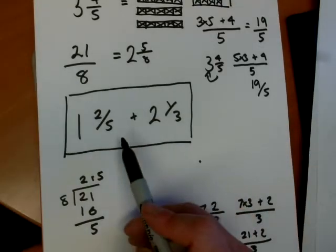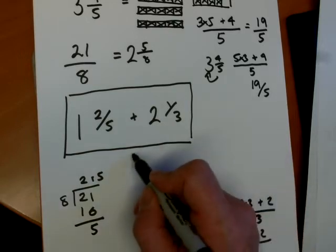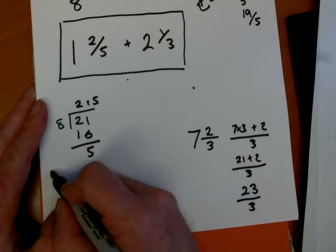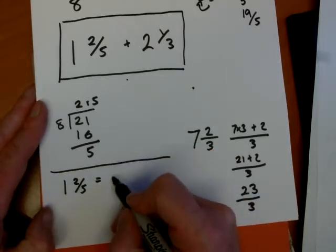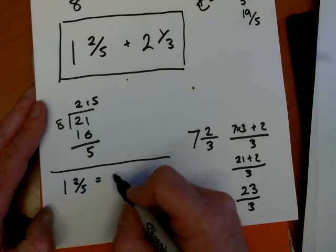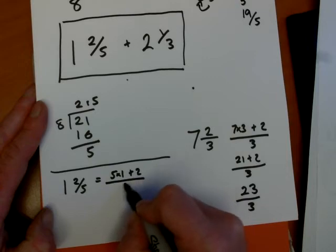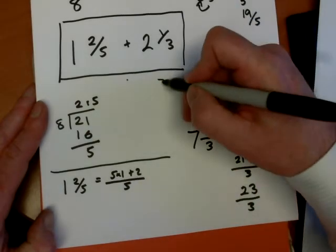If I write 1 and 2 fifths as an improper fraction, I'll do that here. So 1 and 2 fifths will be 5 times 1, 5 times the 1, plus the 2. So 5 times the 1 plus the 2, all over 5. So that's 5 and 2 is 7, so we've got 7 fifths.